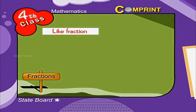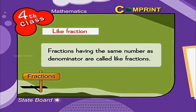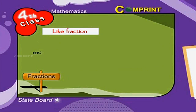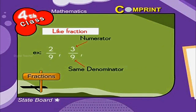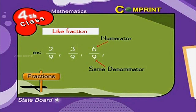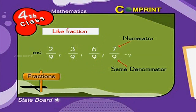Like fractions: Fractions having the same number as denominator are called like fractions. For example, 2 by 9, 3 by 9, 6 by 9, 7 by 9, and so on.